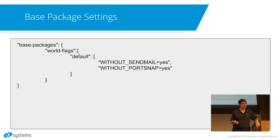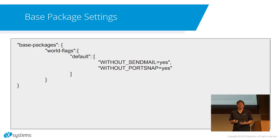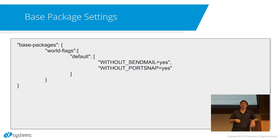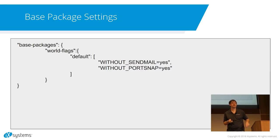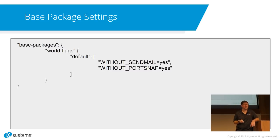Continuing on for base settings — world flags. Sometimes you do want to pass special flags when you're building world. We can go ahead and list those in the JSON manifest now. So it's possible to build a list: I don't want sendmail, I don't want portsnap. For FreeNAS, I think we have like 30 of these set. You can build a long list and have these all in your one JSON file, and they'll get passed along to your build world process.